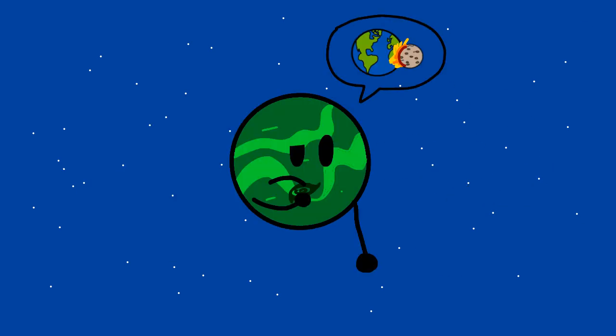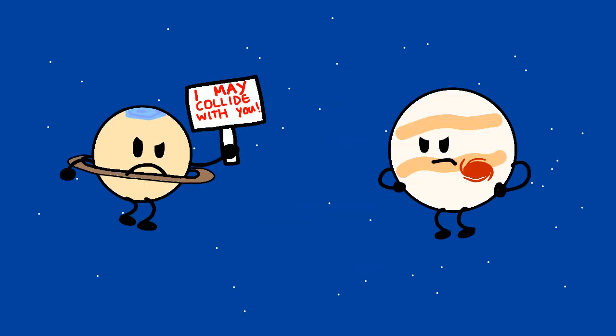Secondly, if Earth and Mercury collide with each other, other planets might listen to the situation. Colliding will become very rampant in our solar system.